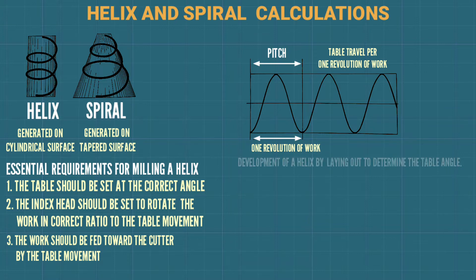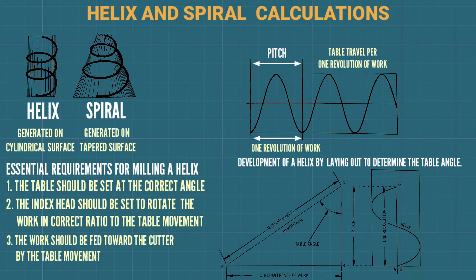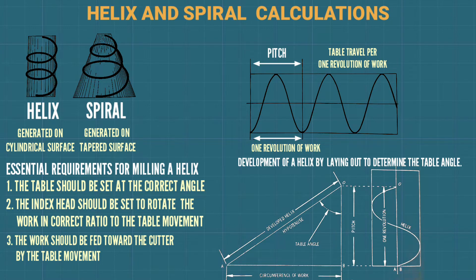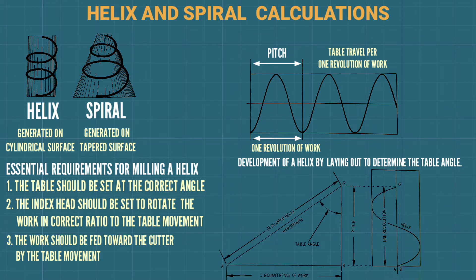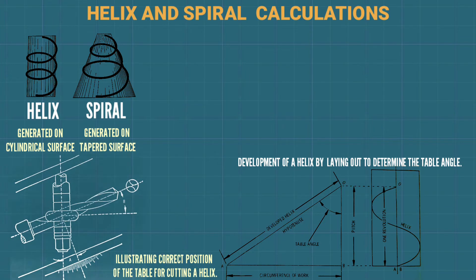Development of the helix by laying out to determine the table angle. This shows the hypotenuse, the table angle, the circumference of the work, the developed helix, the pitch for one revolution, and the helix itself. This illustrates the correct position of the table for cutting a helix.